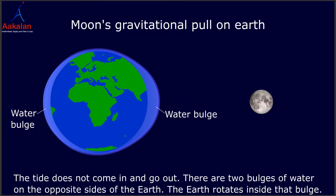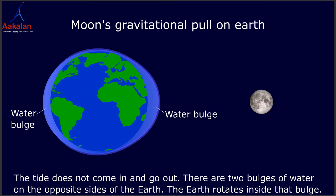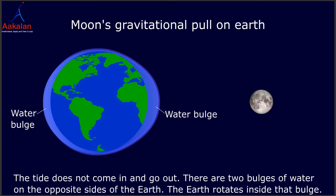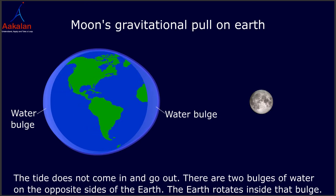The tide does not come in and go out. There are two bulges of water on the opposite sides of the earth. The earth rotates inside that bulge.